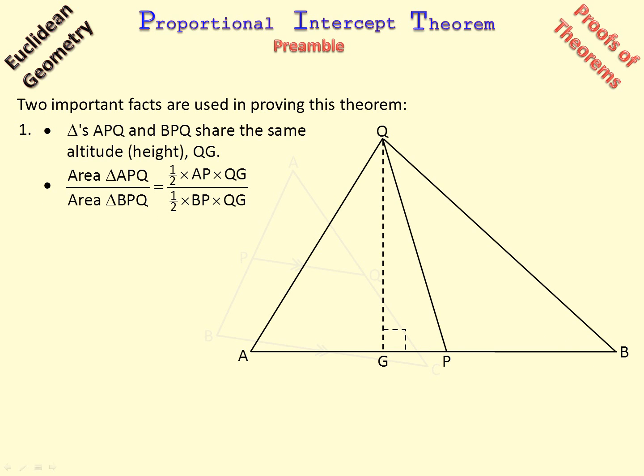Now the area of a triangle is half base times height. So in this triangle we have half base which is AP times height QG. And in this triangle we'll have half base which is BP times its height QG. Now you'll notice that their halves and QG is the same, so we can take them out. And we end up with the area of this triangle to that triangle is equal to the ratio of the bases, AP over BP.